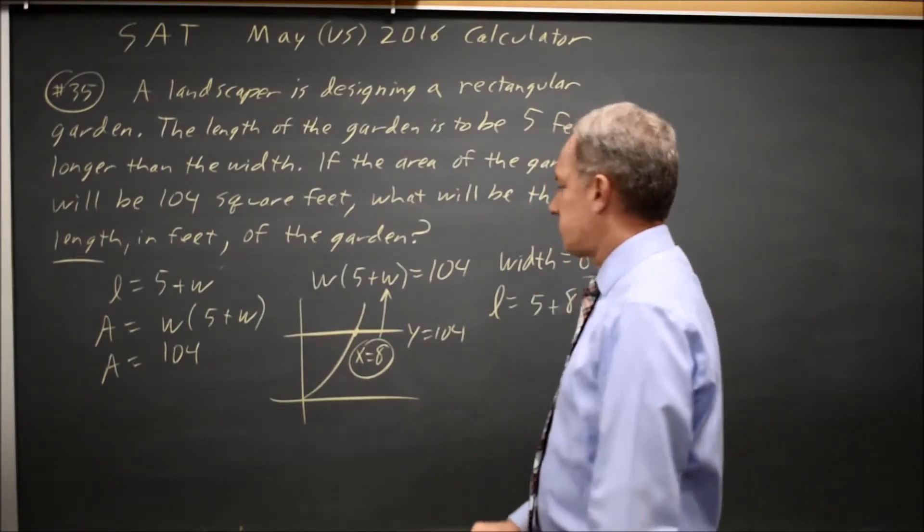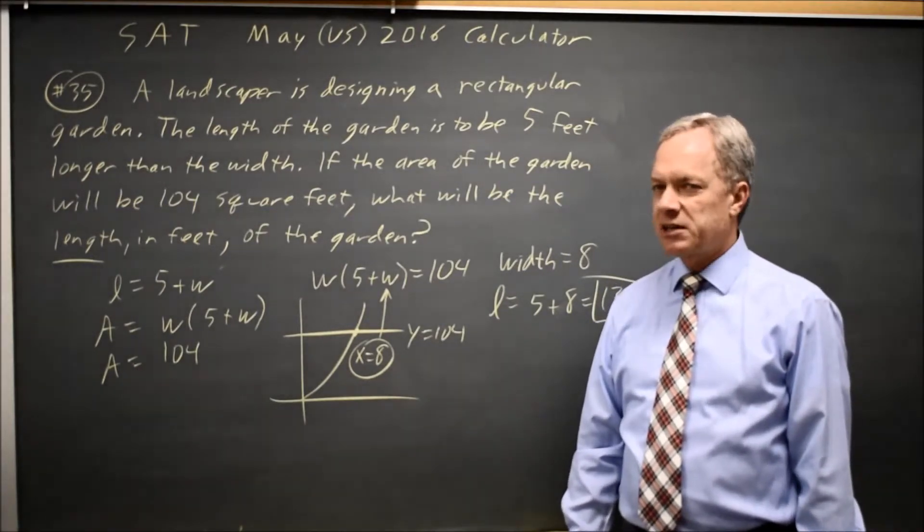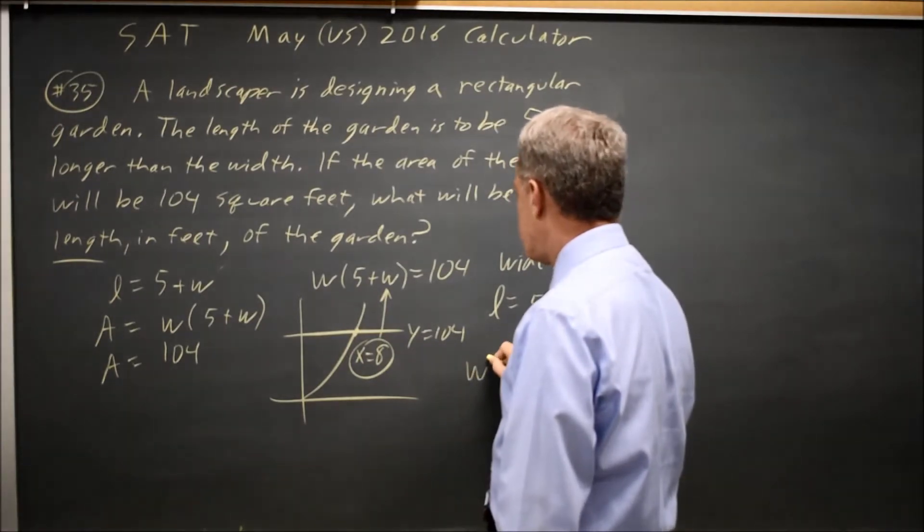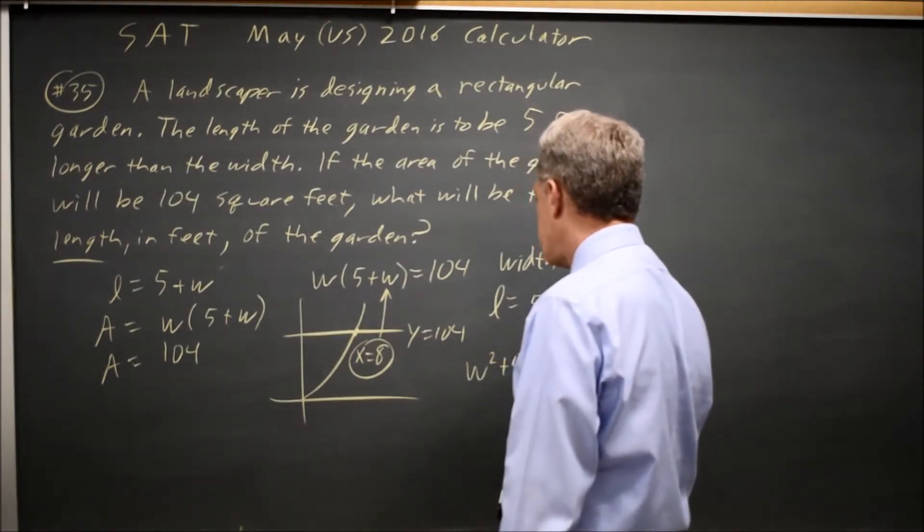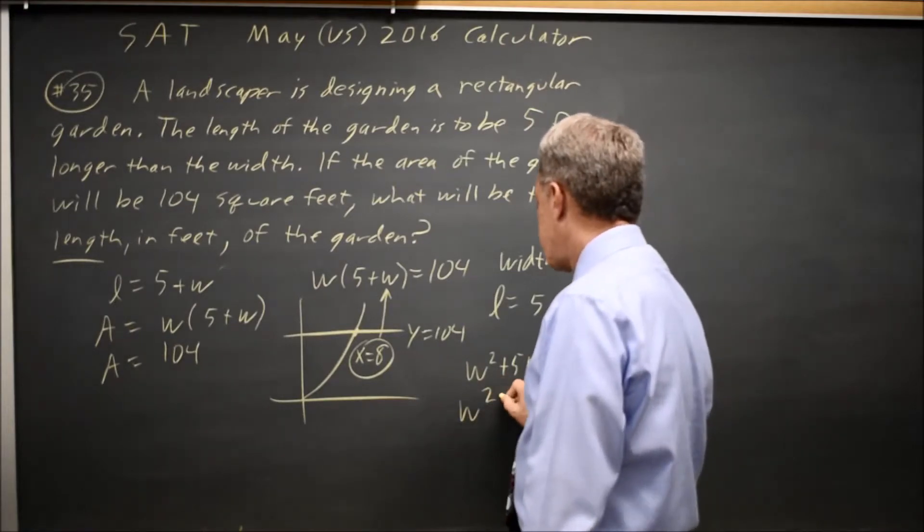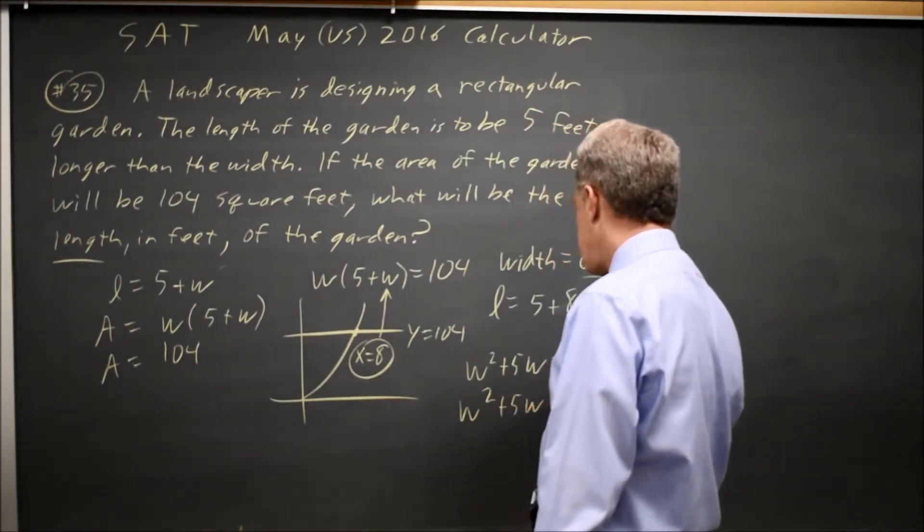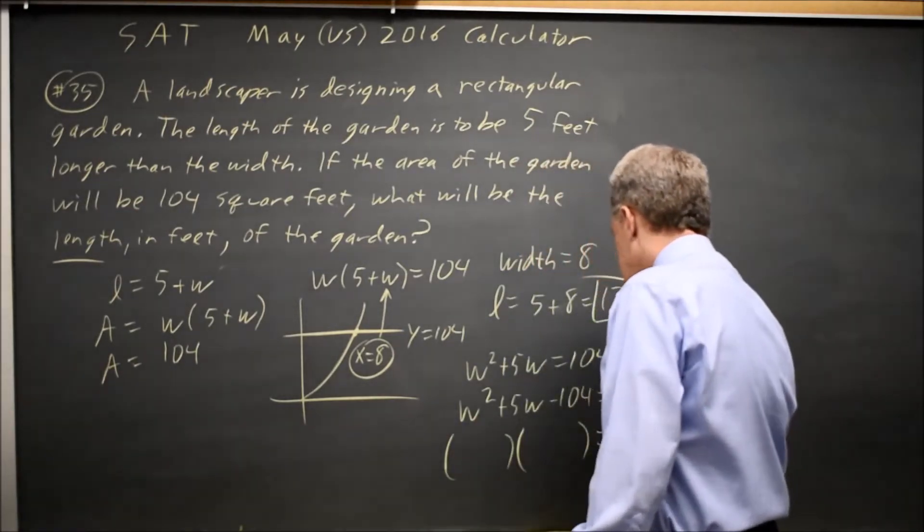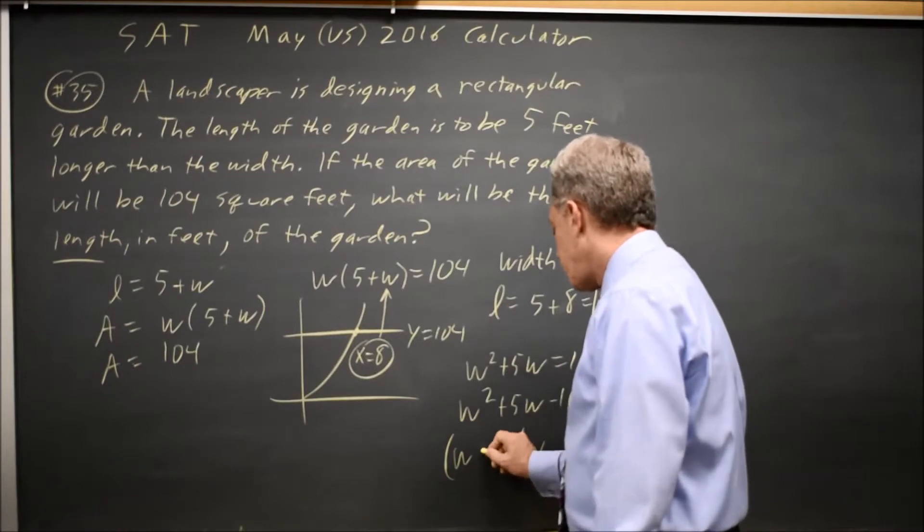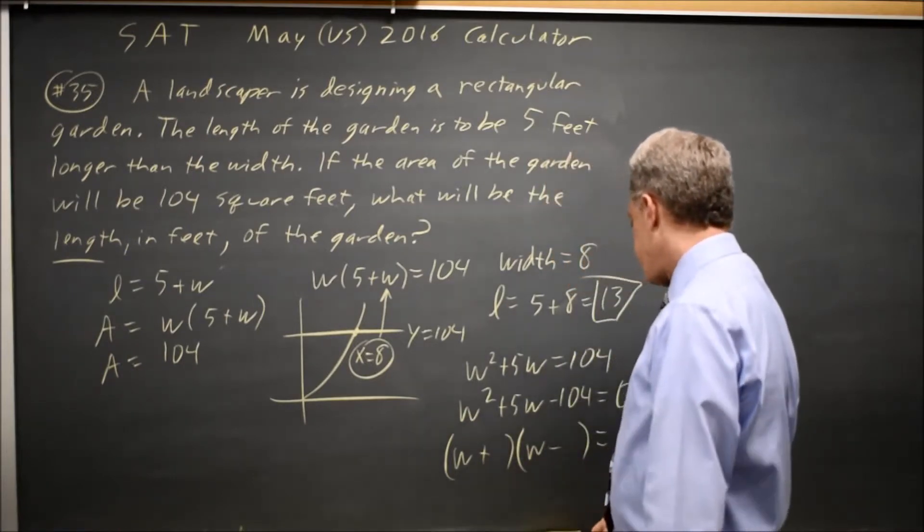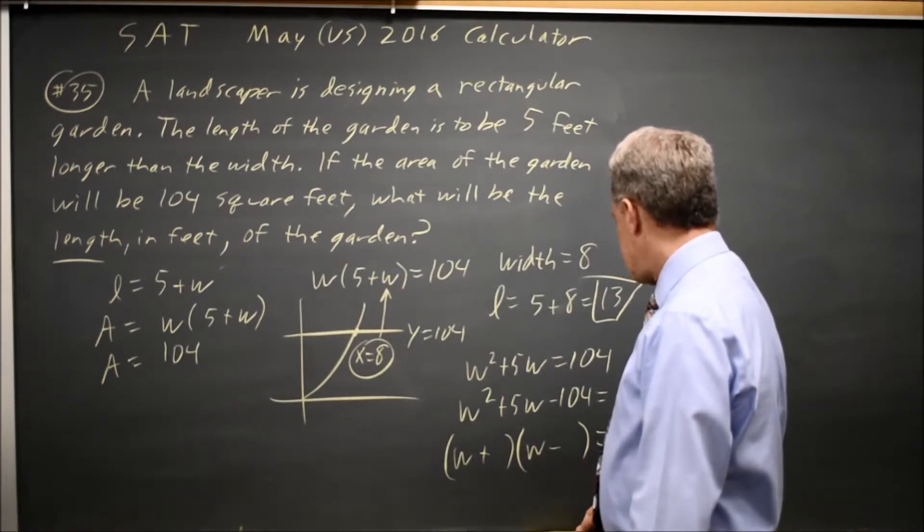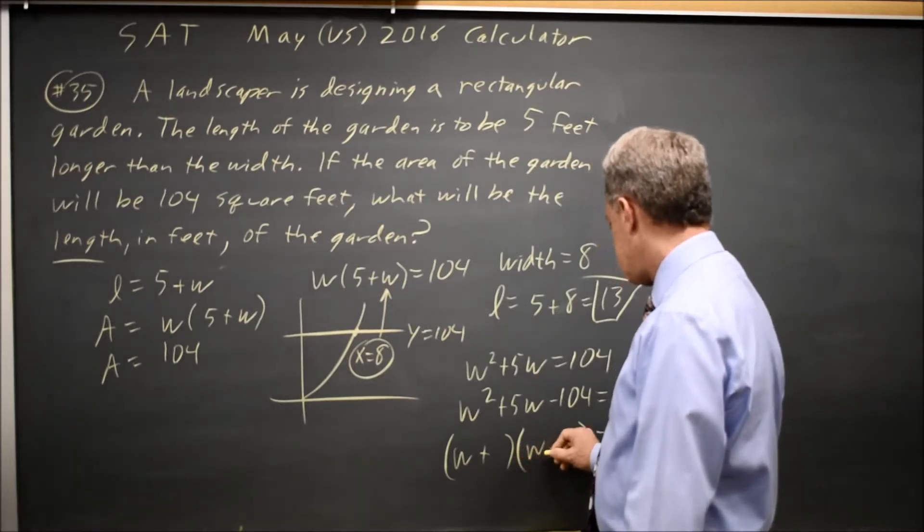We could also solve this by hand. It's not a good use of our time, but W times 5 plus W is W squared plus 5W equals 104, or W squared plus 5W minus 104 equals 0, and we can factor that. We know it's W and W. We've got a positive and a negative, and one of them is 8, and one of them is 5, and is that true? No.